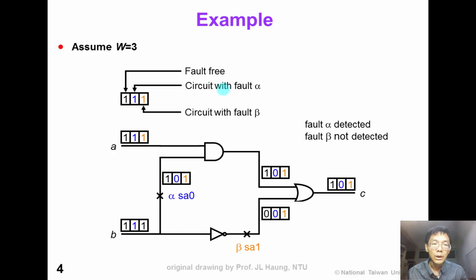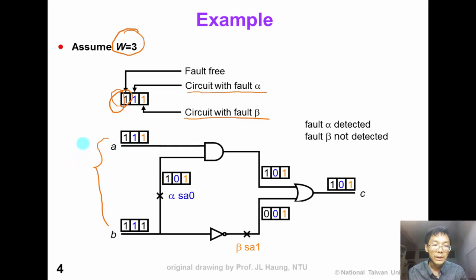Here is an example. Assume that W is equal to 3, so we have three bits for fault simulation. The first bit is reserved for good simulation. The second bit represents fault alpha, and the third bit represents fault beta. In this circuit, assume that we apply pattern 1-1. For the faulty circuit, the second bit is changed to 0 because this bit represents alpha stuck-at-0, and the third bit is flipped to 1 to represent beta stuck-at-1.